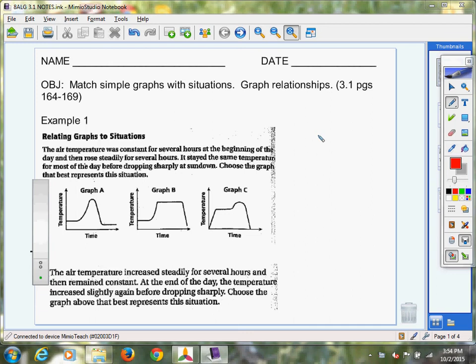Algebra students, we are getting started in chapter 3. We're shifting gears just a little bit. We're going to be talking about graphing and functions and all kinds of stuff in this chapter. So our objective today, we're going to match simple graphs with situations, and then we're going to eventually graph some of these relationships. And we're in section 3.1 today in our textbook.